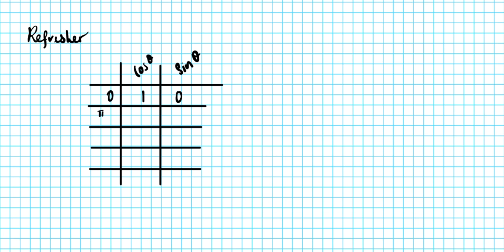We have pi over 6, which is 30 degrees; pi over 4, which is 45 degrees; pi over 3, which is 60 degrees; and pi over 2, which is 90 degrees. Starting with sine, the pattern goes 0, 1, 2, 3 — divide everything by 2 and take square roots. The square root of 1 is 1, then root 2, root 3. So sine goes: 0, one-half, root 2 over 2, root 3 over 2, and then 1.